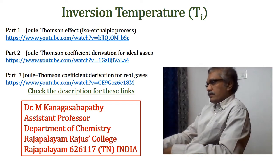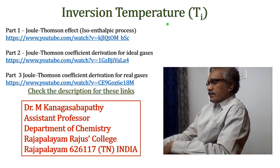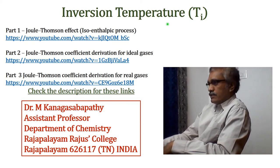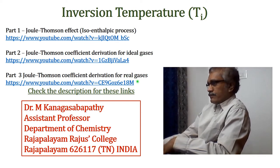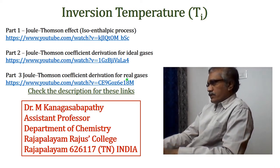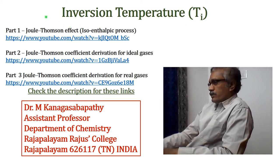Welcome to this session. This is the fourth part of the Joule-Thomson coefficient. In the previous three parts, we discussed the concept of the Joule-Thomson effect and the derivation for the Joule-Thomson coefficient for both ideal gases as well as real gases. Check the previous parts using the links provided. Now we are going to discuss the concept of inversion temperature, which is an extension of the previous parts, particularly the Joule-Thomson coefficient derivation for real gases.